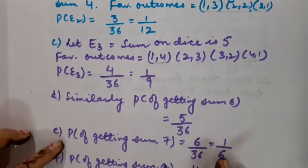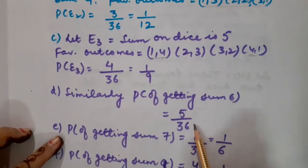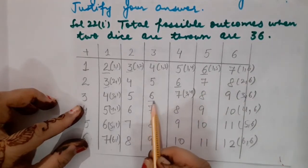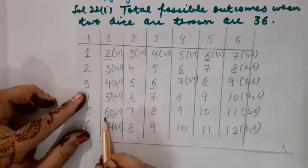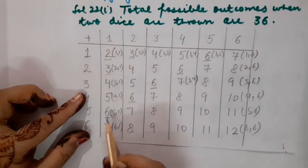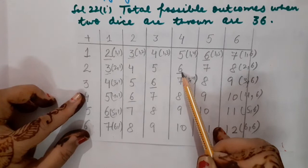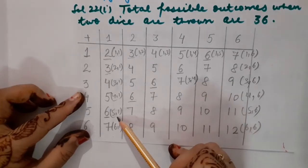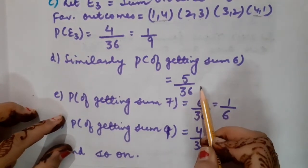The probability of getting the sum as 6 is 5/36. The five favorable outcomes are (1,5), (2,4), (3,3), (4,2), and (5,1) — five outcomes all giving a sum of 6. So the result is 5/36.